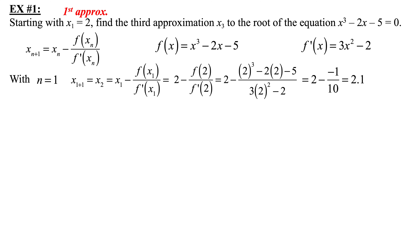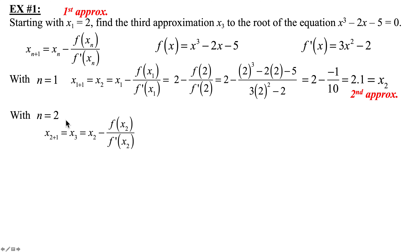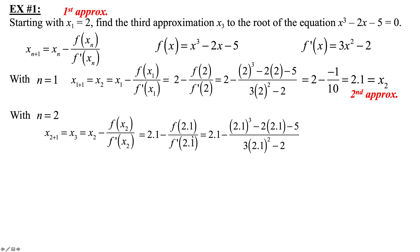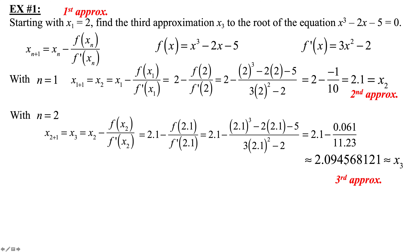Repeating with n equal to 2: x sub 3 equals x sub 2 minus f(x sub 2) over f'(x sub 2). Substituting x sub 2 equals 2.1 and crunching the numbers: 2.1 minus 0.061 over 11.23, which gives approximately 2.094568121. That's your third approximation.